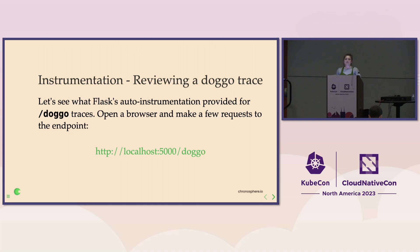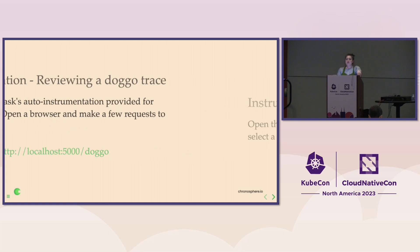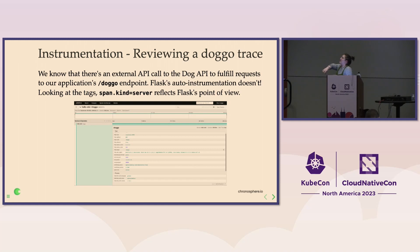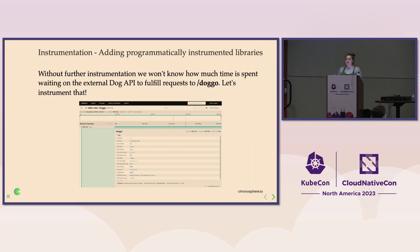Let's see what we get for Doggo. Make a few requests, open up Jaeger, and look at what we get for Doggo out of the box. You'll see it is just a one-span trace, which doesn't tell you a lot, but it does tell you how long it took to fulfill the request to Doggo. If you look closely at the span tags, you'll see span.kind is 'server,' which reflects that this span was generated from Flask's point of view — our application.